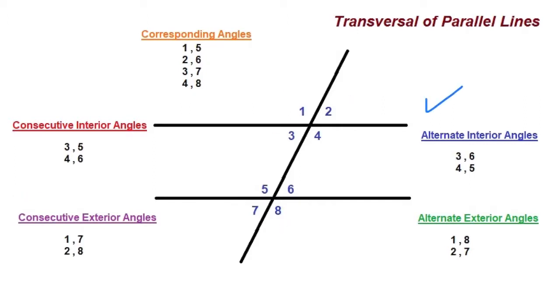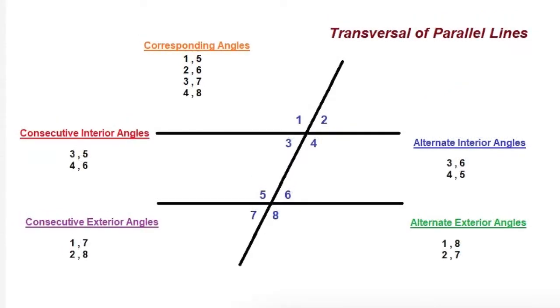Your alternate interior angles are 3 and 6, 4 and 5. Lastly, your alternate exterior angles are going to be 1 and 8, 2 and 7.